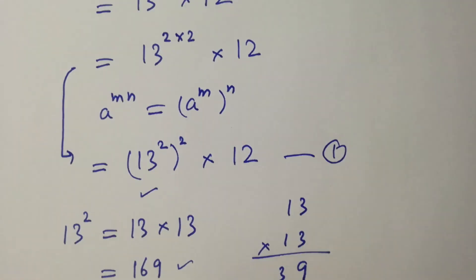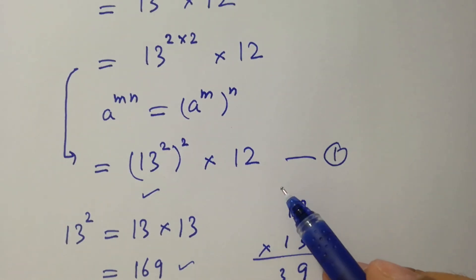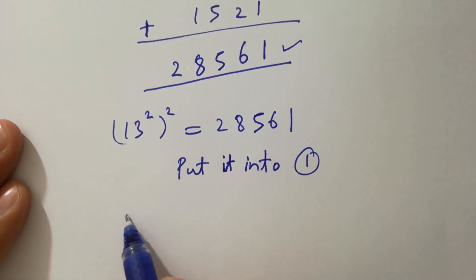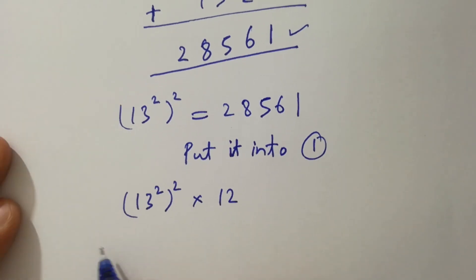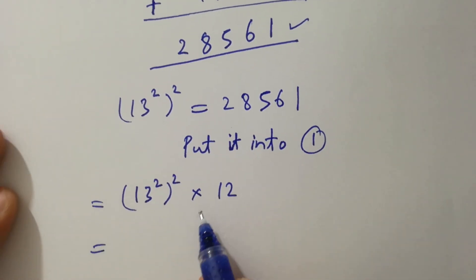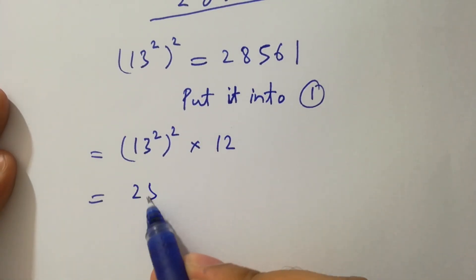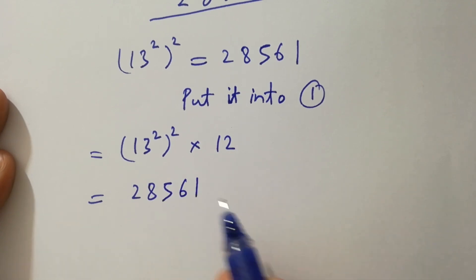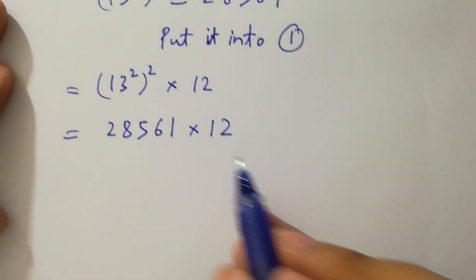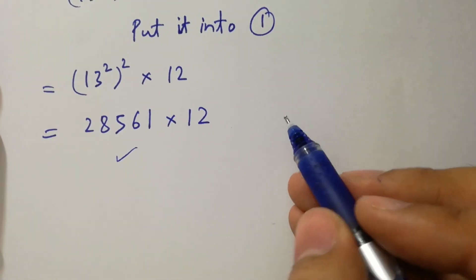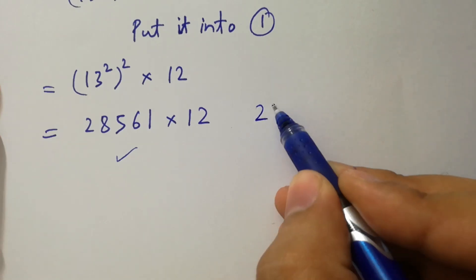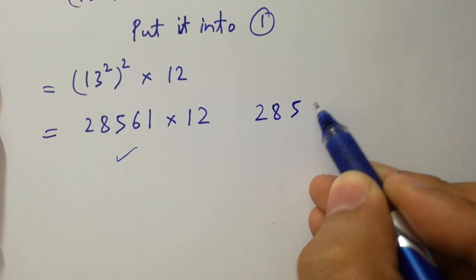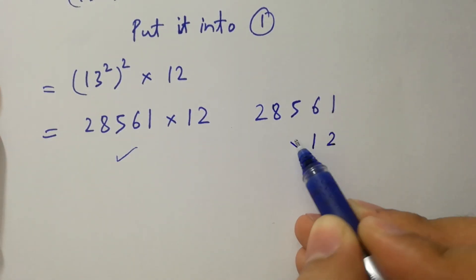So we have 13 squared to the power 2 times 12, that is 13 squared to the power 2 times 12. By substituting, we have 28561 times 12. The next step is to multiply these to get our answer. We have 28561 times 12.